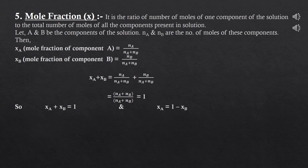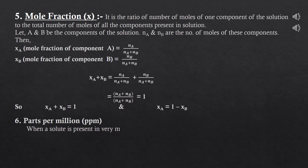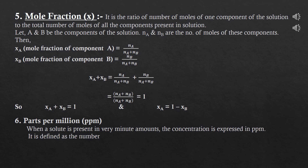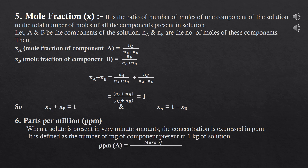The next concentration term is parts per million (ppm). When a solute is present in very minute amounts, concentration is expressed in ppm. It is defined as the number of milligrams of a component per 1000 grams (1 kg) of solution. Concentration in ppm = (mass of component A / total mass of solution) × 10⁶.